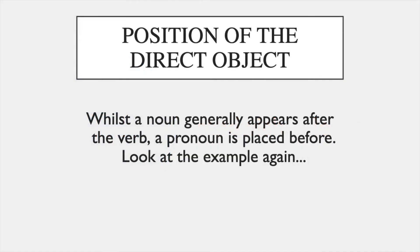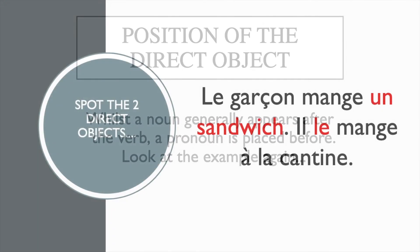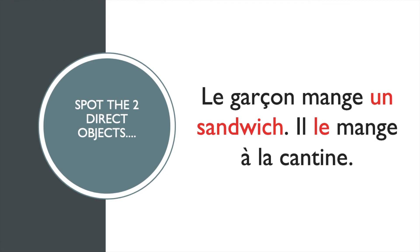Let's look at the position of the direct object. The noun generally appears after the verb; the pronoun comes before. Look at these examples again. 'Le garçon mange un sandwich' — 'un sandwich' comes after 'mange.' 'Il le mange' — 'le,' the pronoun, comes before.